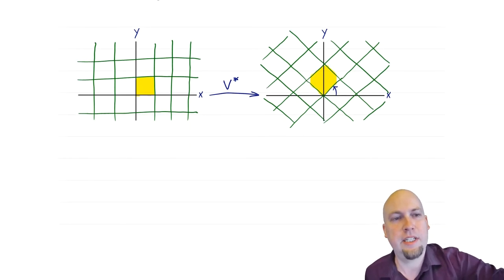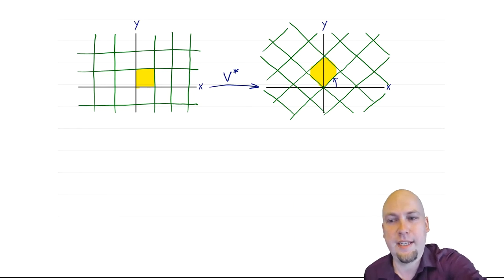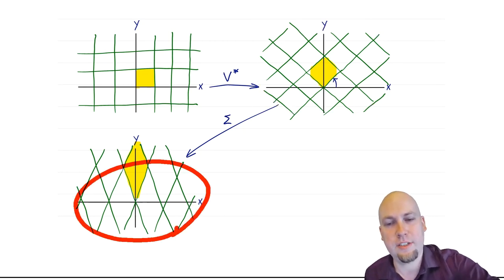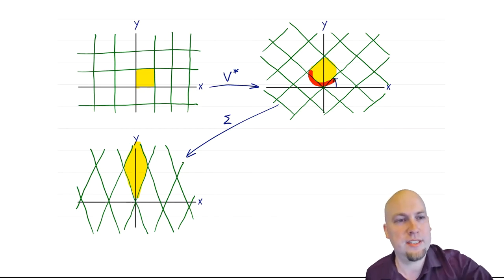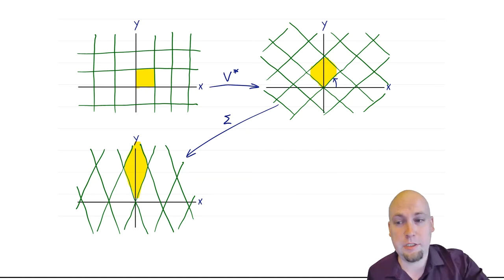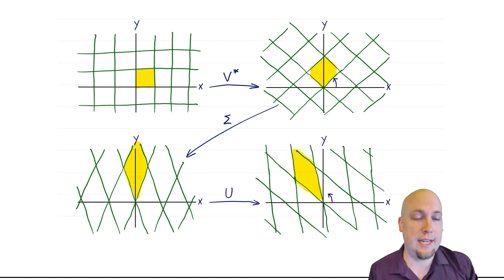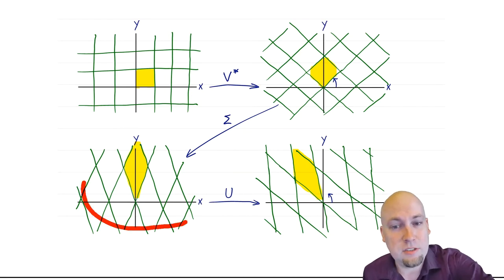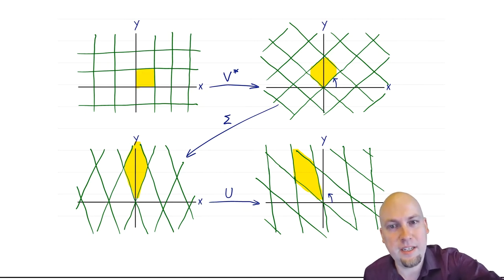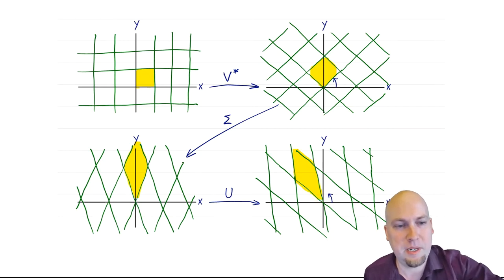The next thing that every linear transformation does is a diagonal scaling — it stretches along the coordinate axes. So I've taken this grid and squished it a tiny bit in the x direction and stretched it in the y direction, so this diamond shape became a stretched diamond — a parallelogram grid. And then the last thing is another unitary: I've rotated this grid counterclockwise a bit more. At the end of the day, this square got turned into this parallelogram, giving us another way of thinking about linear transformations geometrically.